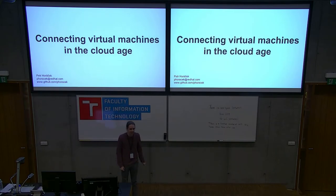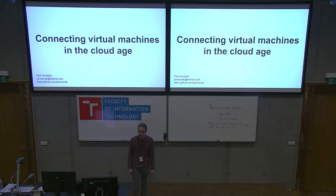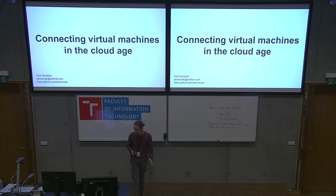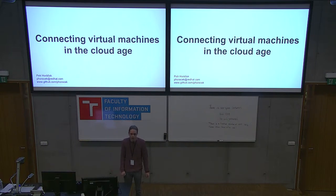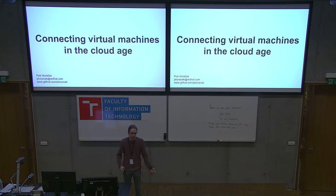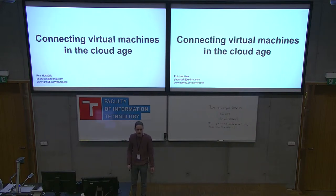Hello everyone, welcome, thanks for coming. The last time I stood up in front of so many people was when I was 14 and playing a triangle in a brass band. My name is Petr Horáček and I've been working at Red Hat here in Brno for the last four years — three years on oVirt, aka Red Hat Virtualization, and a year ago I joined a brand new project called KubVirt. KubVirt is an add-on for Kubernetes that brings virtualization support on top of Kubernetes clusters and allows you to run virtual machines next to your containers. In this talk I will tell you about our journey of implementing an advanced networking solution on top of Kubernetes.